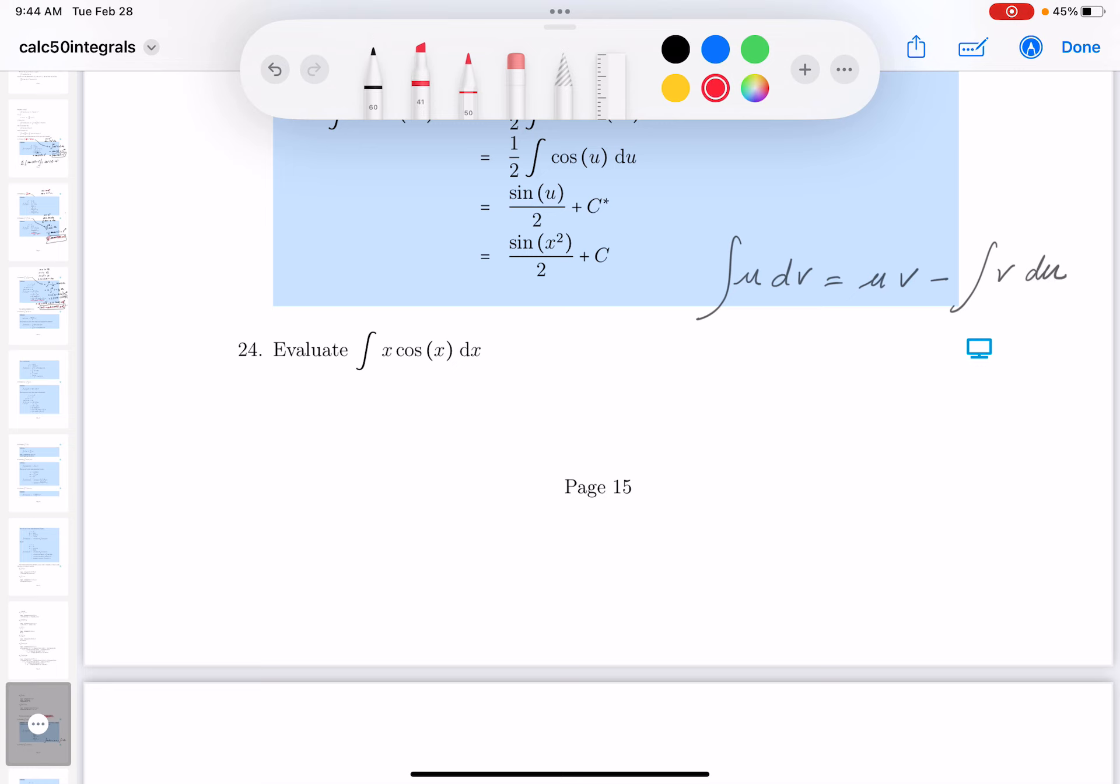So I'm going to say my u in the problem, I'm going to say it's the x. All right, so I'm going to write this over here. u equals x. That forces me to select a dv now. What's a dv going to be? Cosine x dx.